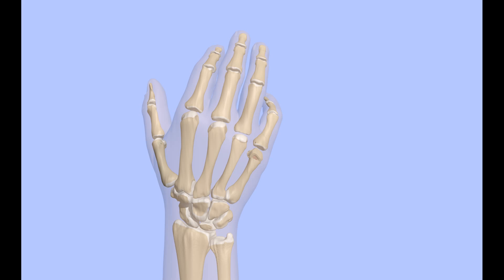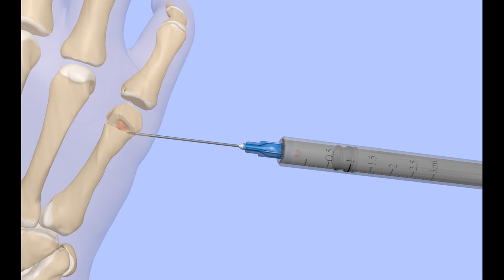After cleansing and sterilizing the skin, a needle is introduced into the fracture site. The plunger on the syringe is pulled back gently. A flash of blood indicates that the needle is in the fracture hematoma. A local anesthetic, such as lidocaine, is injected and the needle removed.